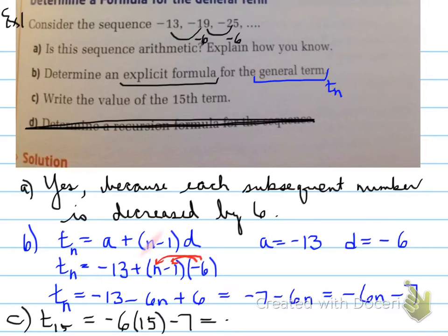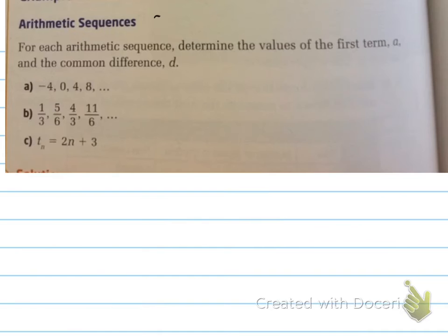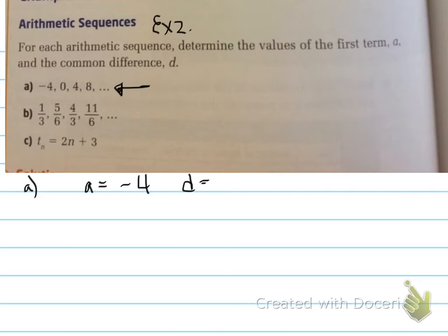Part C says write the value of the 15th term. So I need T15. We plug in n = 15 into the equation and you get T15 = -97.